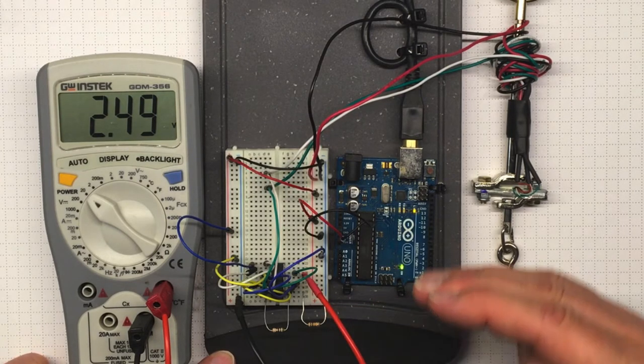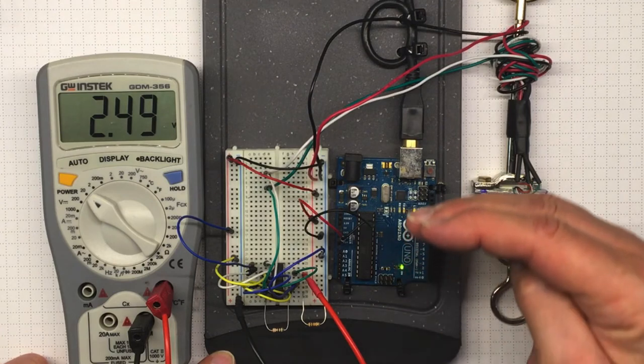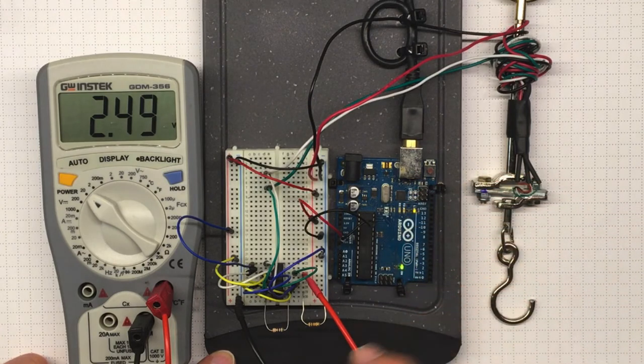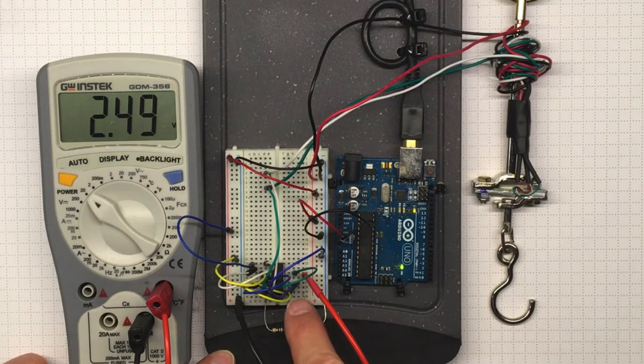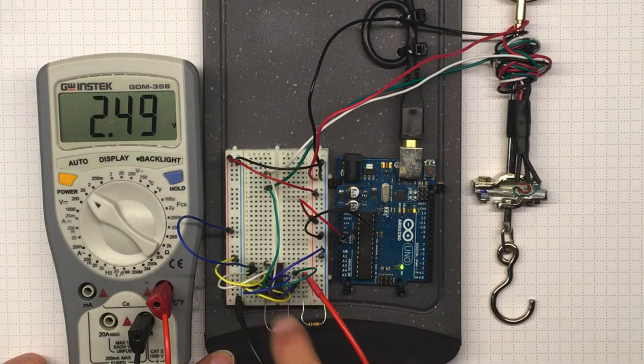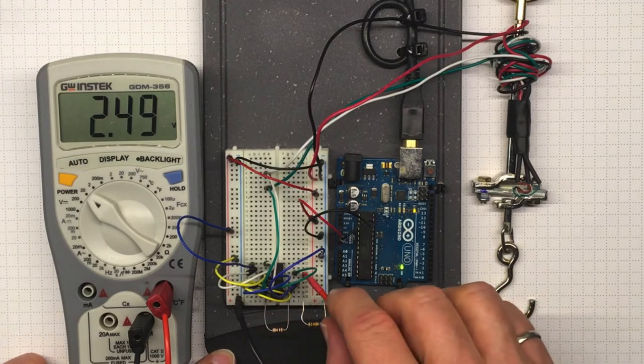So our output is going up and down around 2.5 volts. If the input was exactly 0 millivolts, then our output here would be 2.5 volts. If it was larger positive, it would go up. If it was larger negative, it would go down.